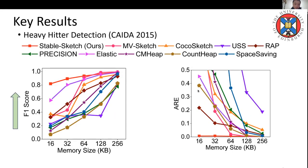Here we show some key results of our method on heavy hitter detection. As you can see, our method achieved the highest accuracy F1 score compared with existing methods, even under the limited memory allocation of 16KB, and also the lowest average relative error.